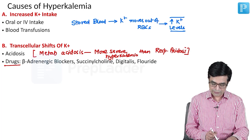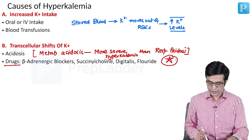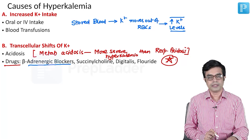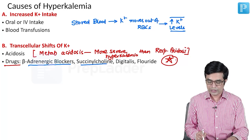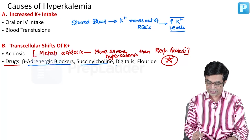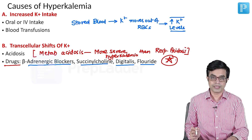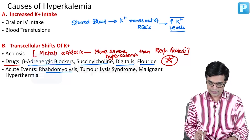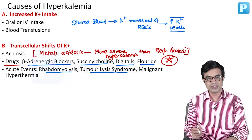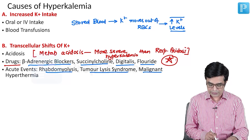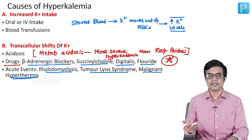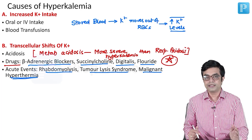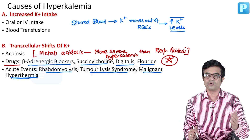Important drugs causing hyperkalemia via transcellular shifts include: beta-blockers, succinylcholine, digitalis, and fluoride intoxication. A third category of acute events includes rhabdomyolysis, tumor lysis syndrome in multiple malignancies, and malignant hyperthermia — a complication of certain anesthetics. All of these can produce hyperkalemia by causing increased potassium movement from inside to outside the cell.